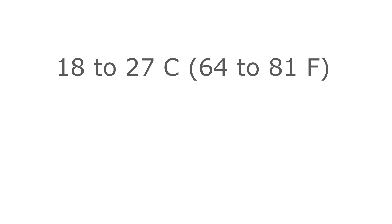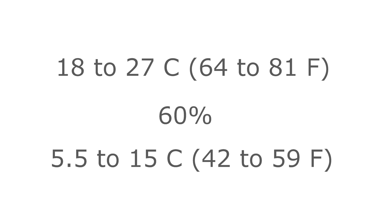One of your jobs as an RCDD is to evaluate the heat produced by each piece of equipment you design for the ER, and then design or recommend a design which meets the standards set forth by ASHRAE. ASHRAE recommends a temperature range of 18 to 27 degrees Celsius, or 64 to 81 degrees Fahrenheit, and a 60% relative humidity with a dew point range of 5.5 to 15 degrees Celsius, or 42 to 59 degrees Fahrenheit.